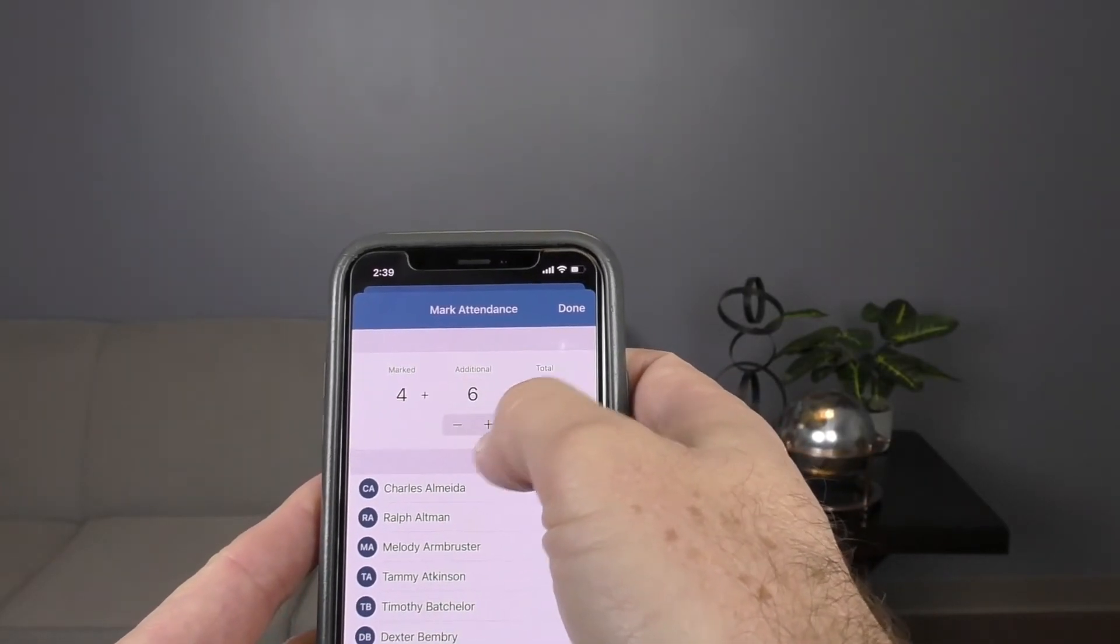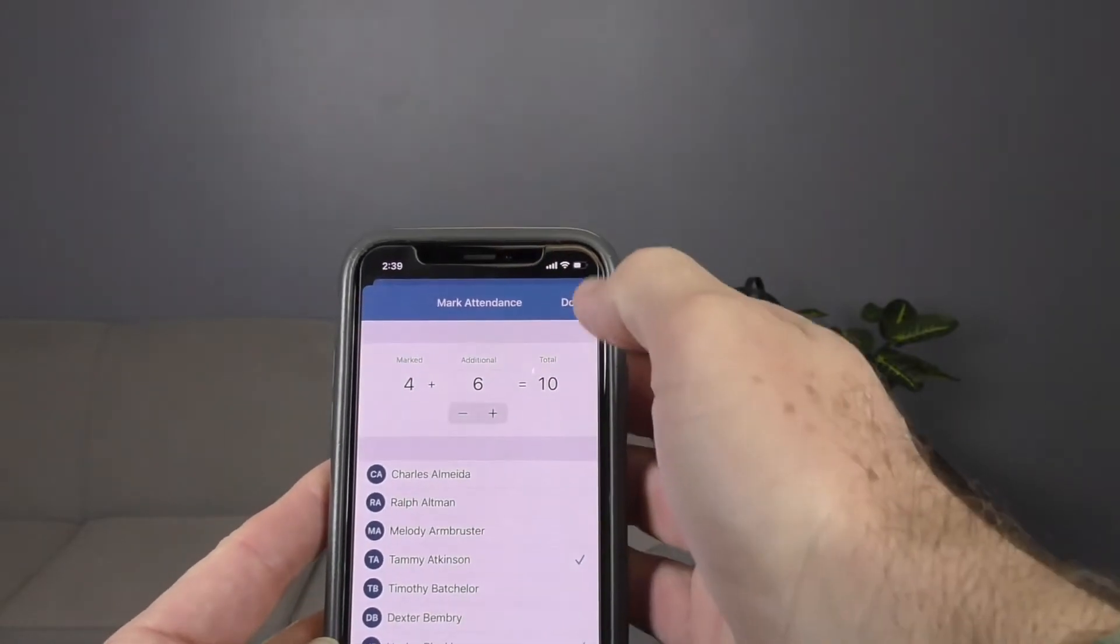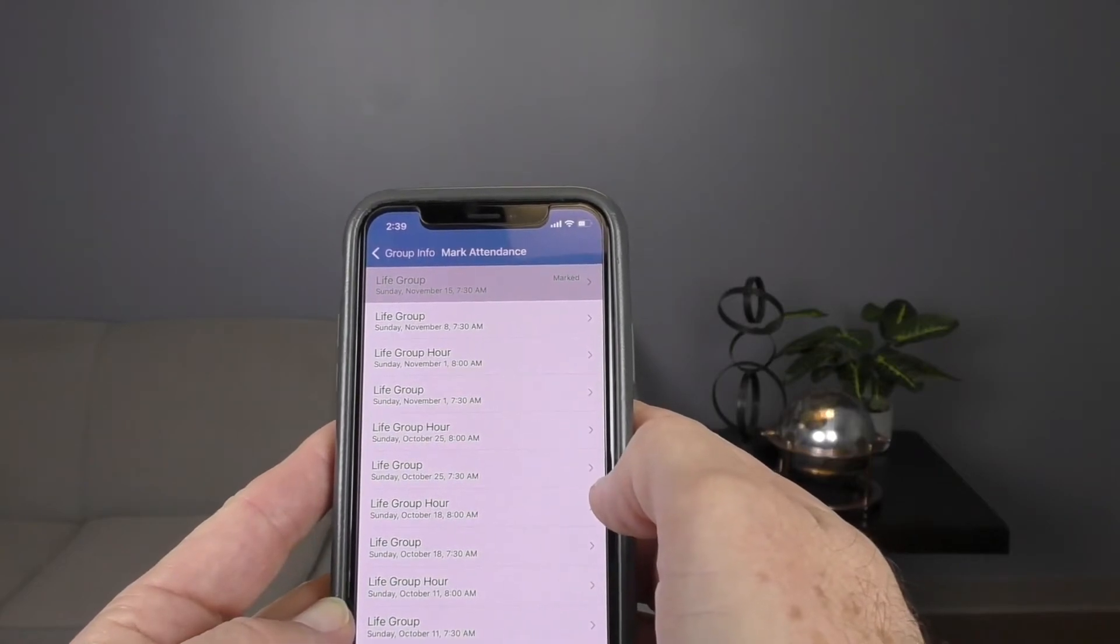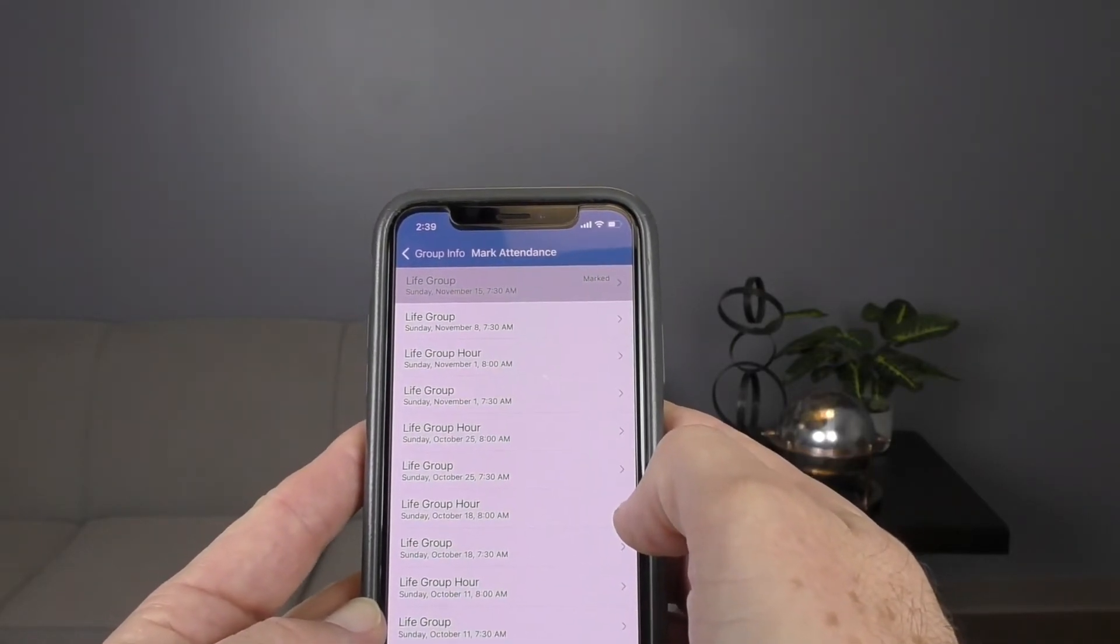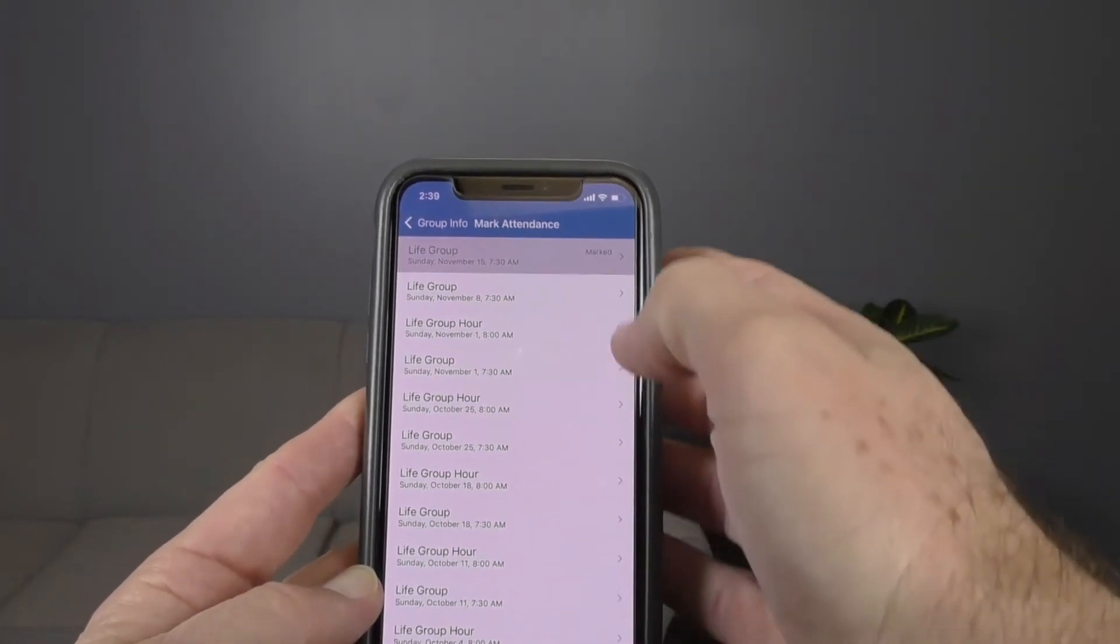Every time you do that it increases, and once you're finished doing all that you simply hit 'done.' And the role's been taken and all that information populates our database here at the church. It's that simple.